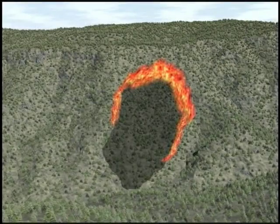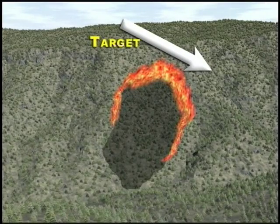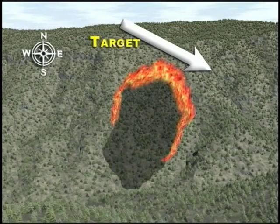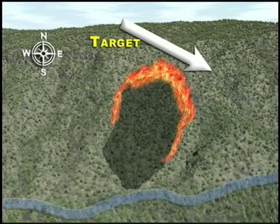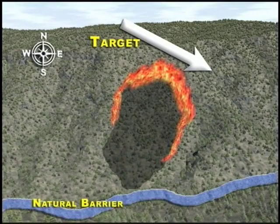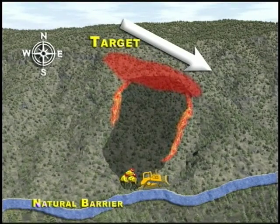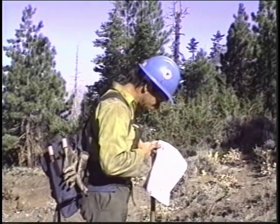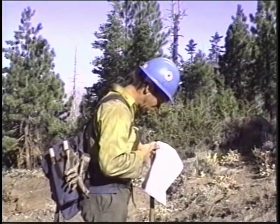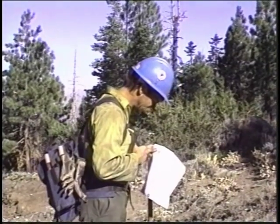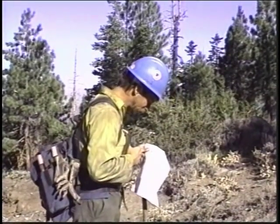For example, here is a basic fire diagram. This demonstrates target position. These are cardinal points. Here is an example of natural barriers. This illustrates loads already dropped, and this is an example of personnel and equipment. After successfully identifying the target area, it is essential that the crew boss communicates the target objective to the pilot.